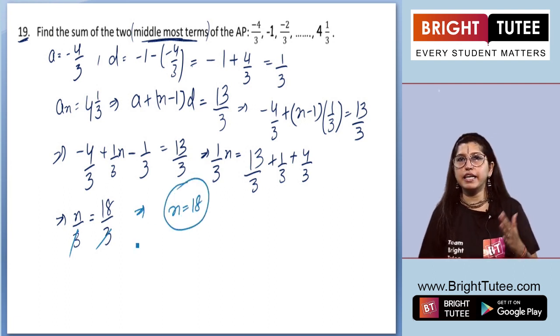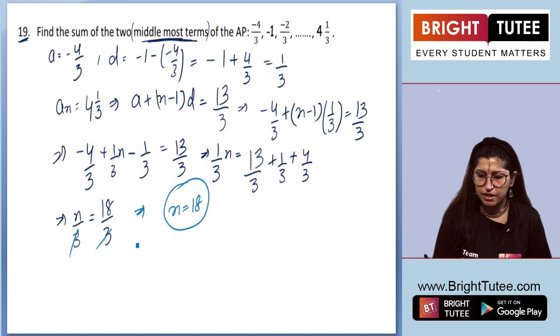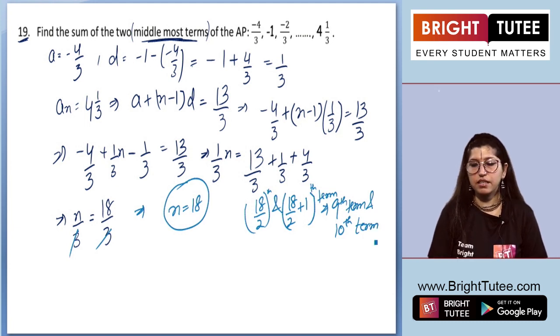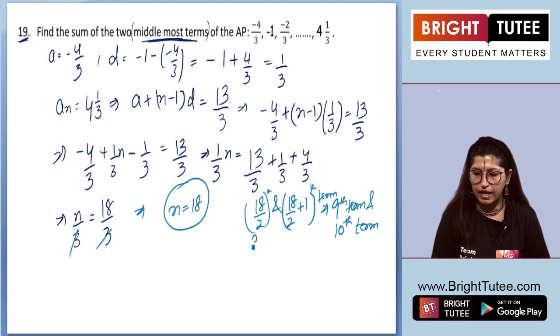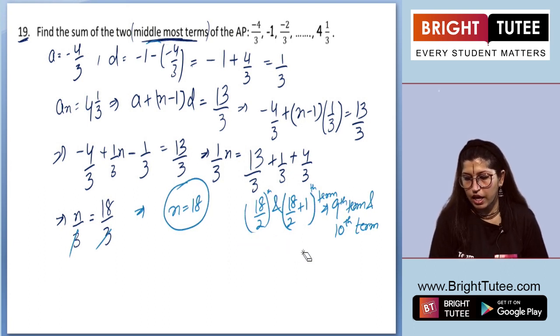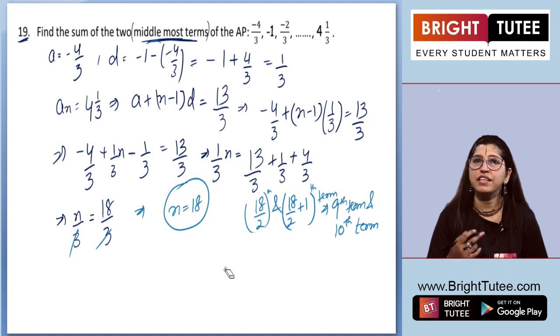Now we know that the number of terms is 18. If the number of terms is 18, what will be the two middle most terms? How do we find it? 18 by 2 and 18 by 2 plus 1th term. So that will be 9th term and 10th term. Now what students do, the mistake is, they will be straight away writing 9 plus 10 which is 19. So the sum of two middle most terms is 19. But this is not the correct answer.